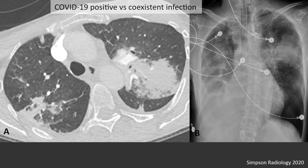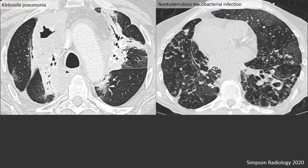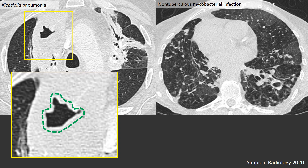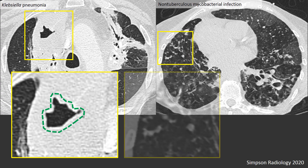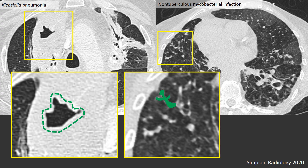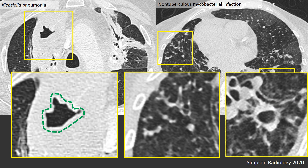Here's a case with atypical features: segmental consolidation in the left upper lobe visible on both CT and chest radiograph. This person did test positive, but there was debate as to whether this reflected COVID-19 or a secondary infectious process such as bacterial pneumonia. A Klebsiella pneumonia case demonstrates consolidation without ground glass opacity and an area of cavitation — which has not been reported in COVID-19. Atypical mycobacteria demonstrates tree-in-bud opacities and a single focus of cavitation, also infrequently reported in COVID-19.